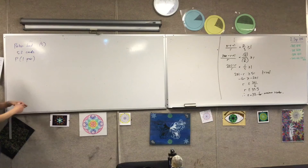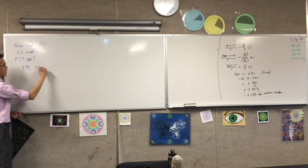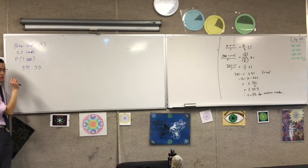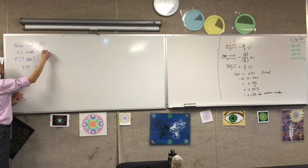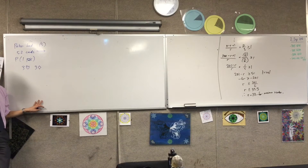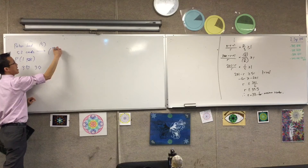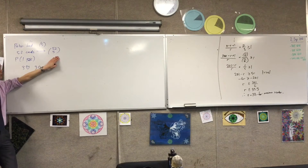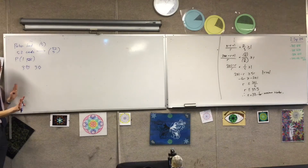First, we've got to remember what a pair is. There are 52 cards to choose from and I've got to pick five of them, so my sample space is 52C5. This is all the possible poker hands, and it's a lot of them. That's my denominator. All I've got to work out is the numerator — the number of ways to get a pair.